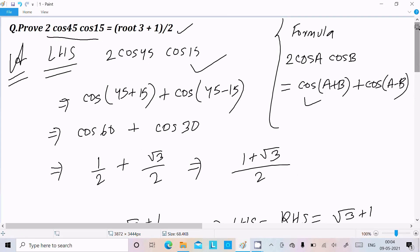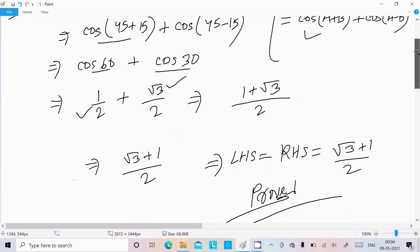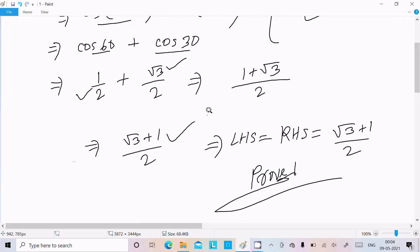One time going to repeat: here LHS is taken and we need to remember the formula 2 cos A cos B equals cos(A plus B) plus cos(A minus B). Now cos 60 here, cos 30 here. Cos 60 value 1 by 2, cos 30 value root 3 by 2, and after here you get root 3 plus 1 by 2.